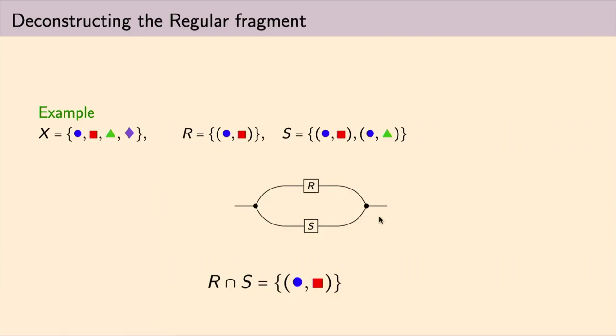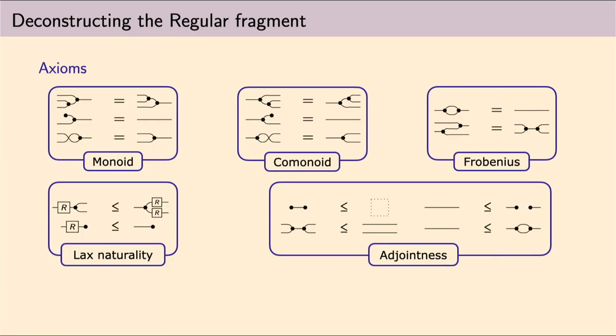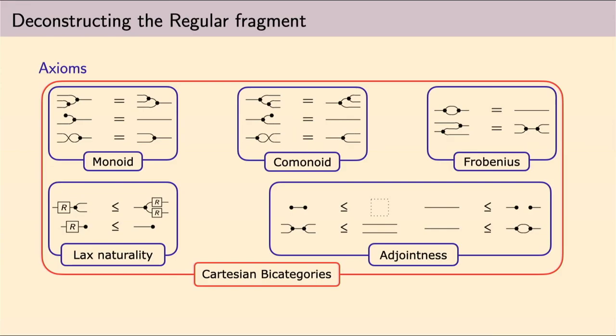But, most importantly, these smaller pieces of our syntax are, in some sense, well-behaved. They satisfy a set of equational laws which reflects a very well-known algebra structure. For example, our co-duplicator is a monoid, the duplicator is a comonoid. Together, they are one of the fundamental ways in which monoidal comonoid interacts, which is the Frobenius bialgebra. Then, they satisfy some lax naturality condition and adjointness condition. All in all, these are the axioms of Cartesian bicategories.